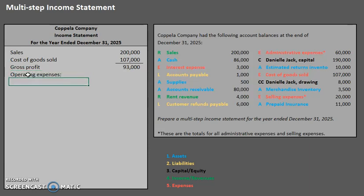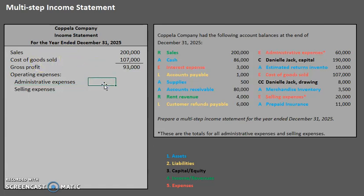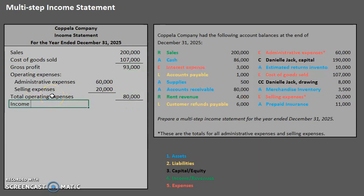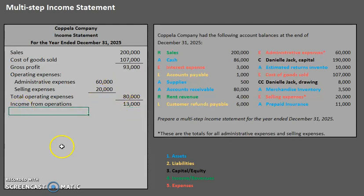Our next step is operating expenses. We have two different types of operating expenses: administrative expenses of $60,000 and selling expenses of $20,000, for total operating expenses of $80,000. The next formula: gross profit minus total operating expenses equals income from operations. So $93,000 minus $80,000 gives us income from operations of $13,000.